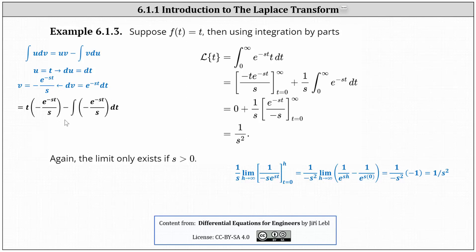Applying the integration by parts formula to the improper integral, evaluating the first part gives zero, and then we have plus one divided by s times the integral from zero to infinity of e to the power of negative st dt, giving an antiderivative of e to the power of negative st divided by negative s. Using limit notation and moving the negative exponent to the denominator to evaluate the limit, the result is one divided by s squared for the Laplace transform of f of t equals t. This Laplace transform exists only when s is greater than zero.